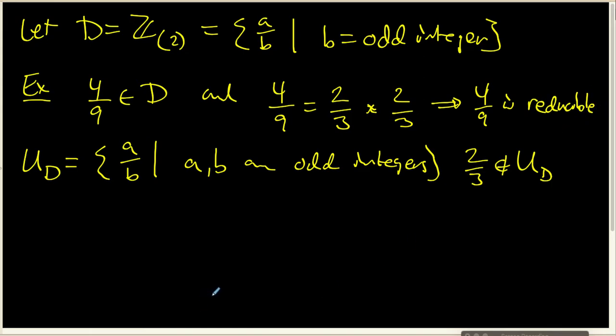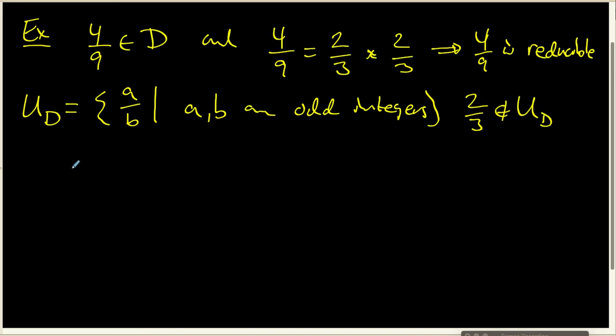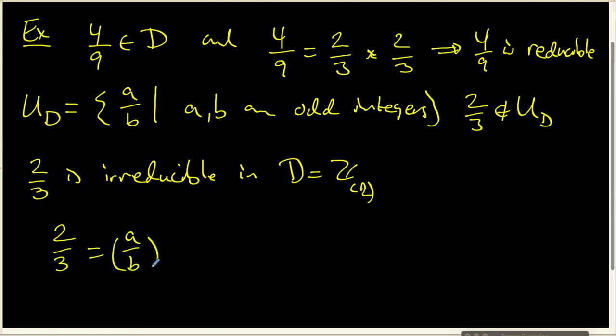Now, I also want to have an example of an irreducible element inside this same ring. And the one that I'm going to actually look at is, let's just look at 2/3rds. 2/3rds is irreducible inside our domain, which is the localized ring of integers localized at 2. And I want to think about why is 2/3rds irreducible inside this domain.